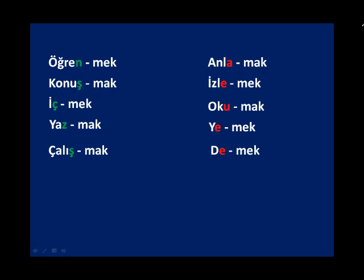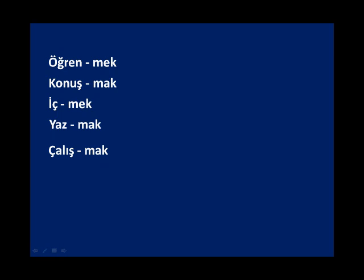Now we're going to take these two groups separately when we use them in the present continuous tense. For the first group, in order to make a verb in the present continuous tense — as in 'I am doing', 'I am going', 'I am learning' — you're going to have to use a specific suffix: '-iyor'. And '-iyor' is an E-type suffix, so it has four forms.